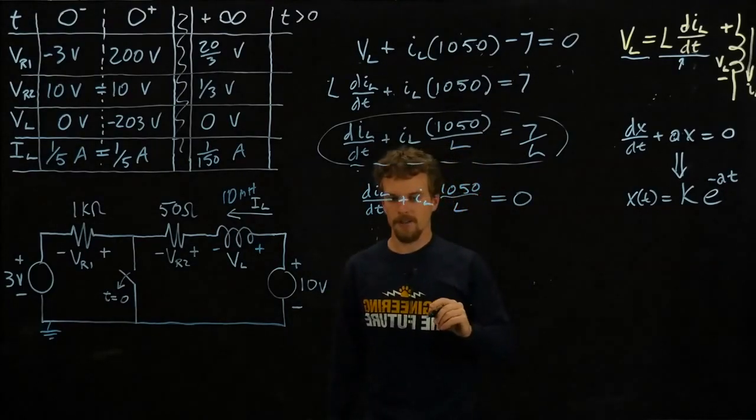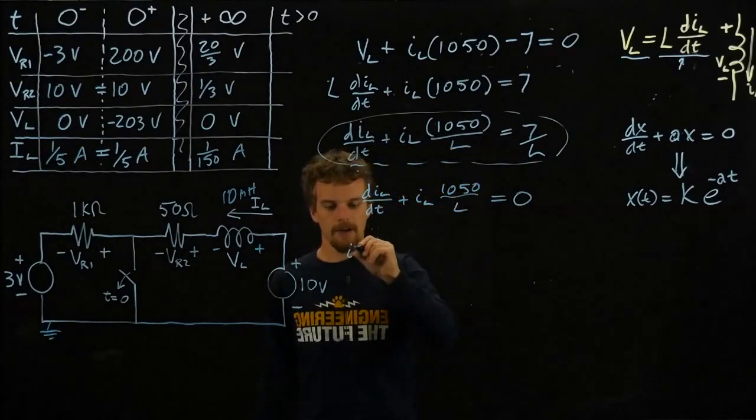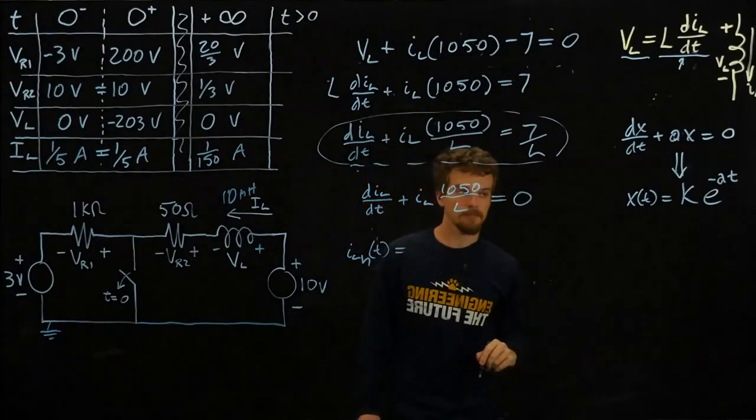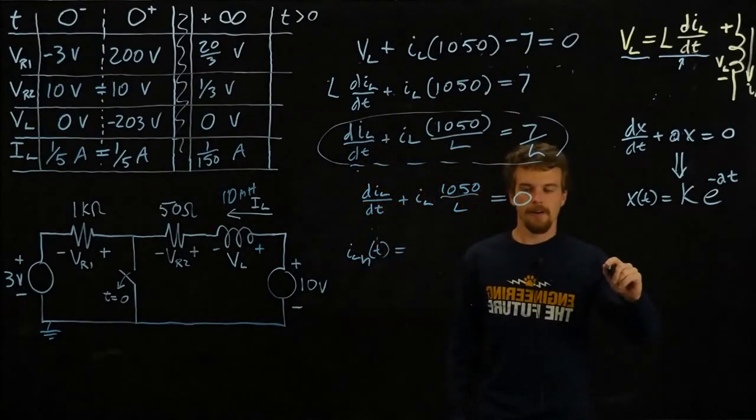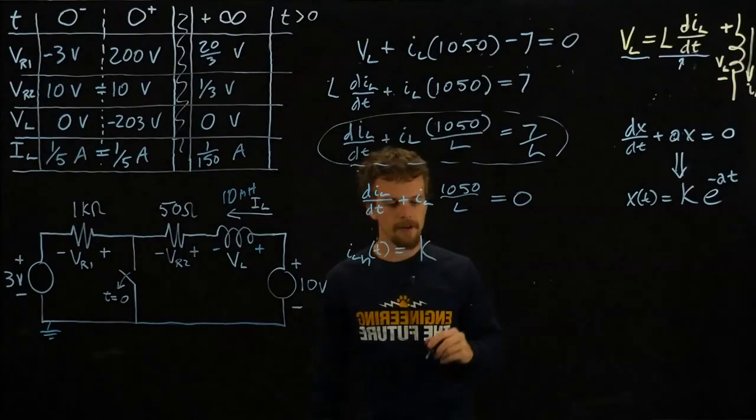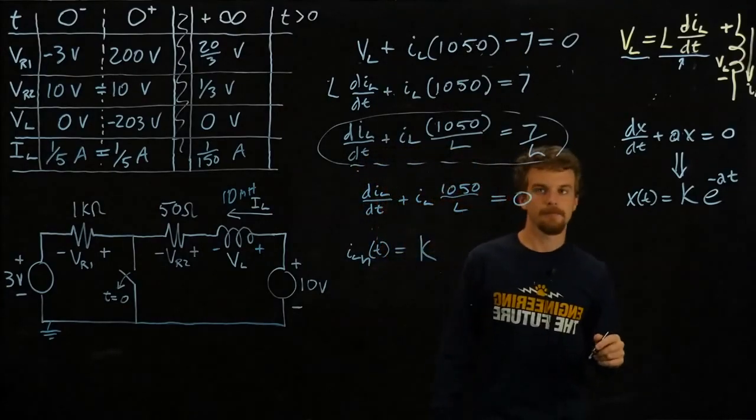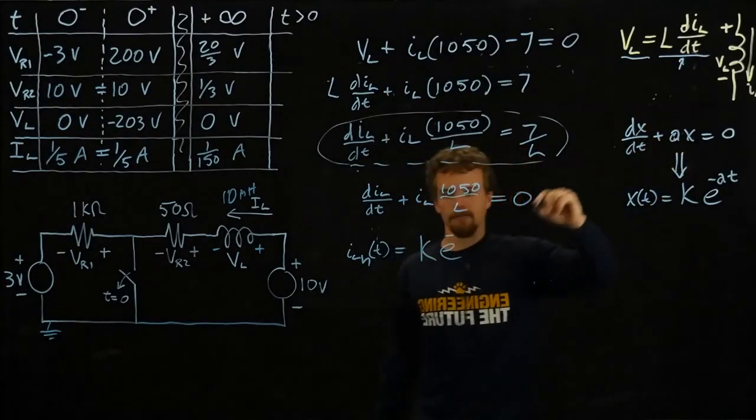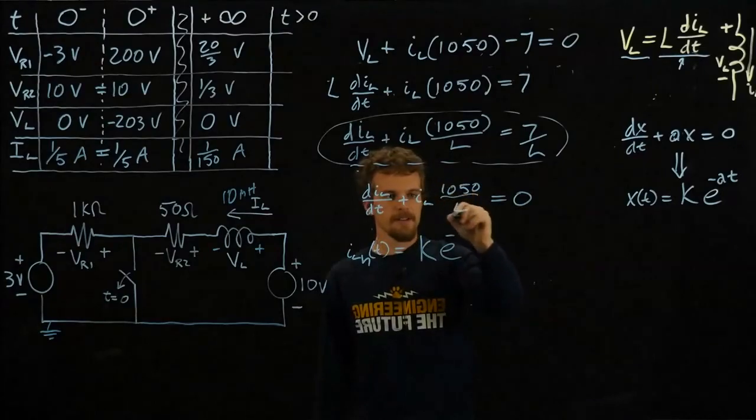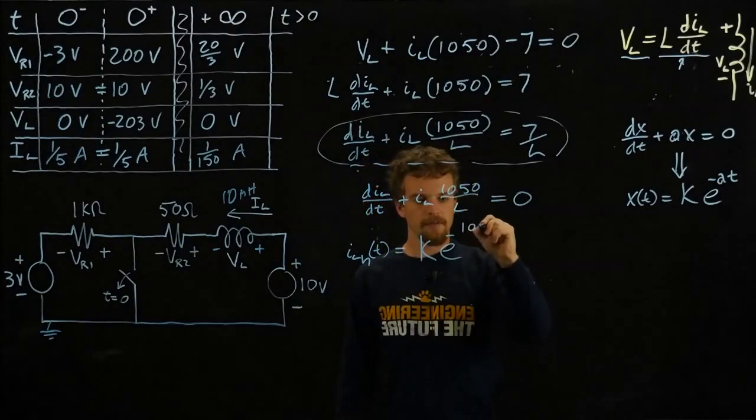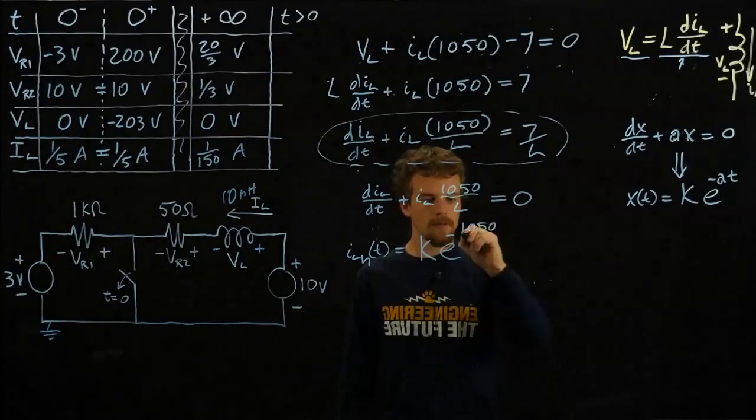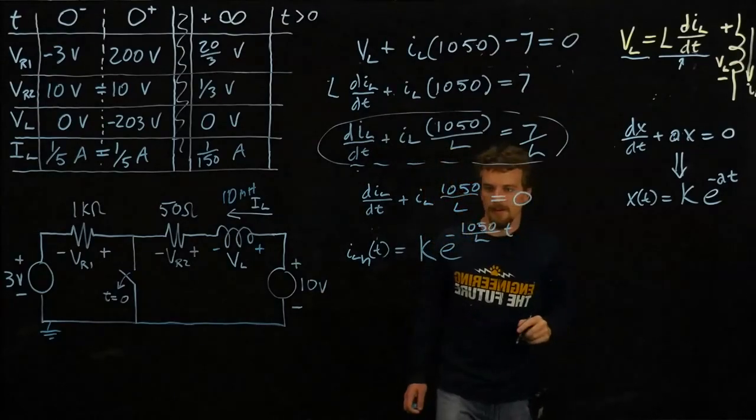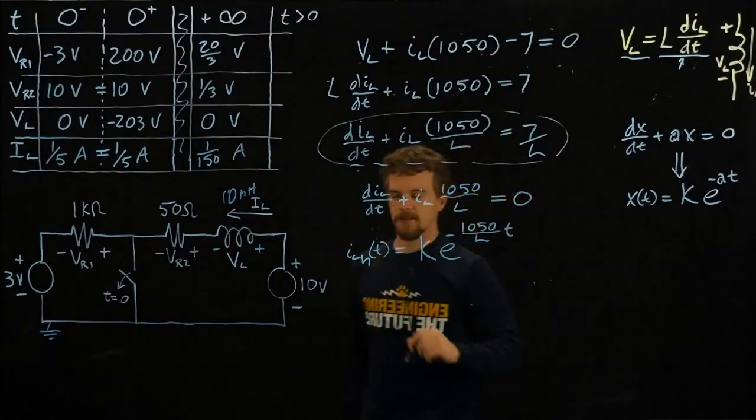If we look here, we have a differential equation with that form, so our homogeneous solution, we'll call it ILH for homogeneous, is equal to an unknown arbitrary constant times e to the negative. So what's our A in this case? That would be negative 1050 over L times t. So that is our homogeneous solution.